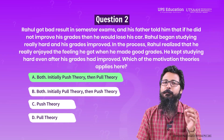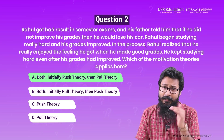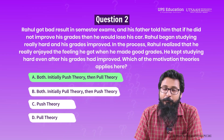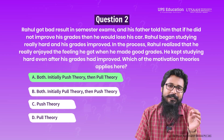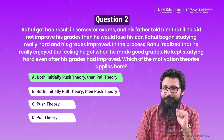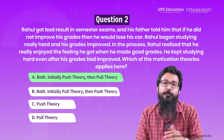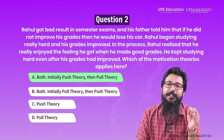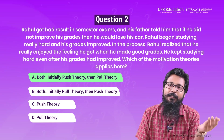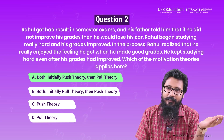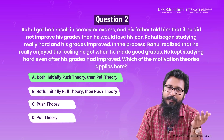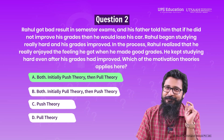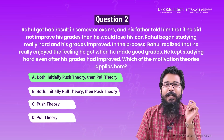This scenario illustrates the interplay between push and pull motivation theories. Initially, Rahul was motivated by a push factor, because there was a threat of losing his car if he did not improve his grades. This represents an external pressure that pushed him to study. As Rahul began to experience positive feelings associated with achieving good grades, he became motivated by a pull factor — the intrinsic enjoyment and satisfaction derived from learning and doing well. The push factor of external threat initially motivated Rahul, but the pull factor of intrinsic motivation sustained his effort over time.